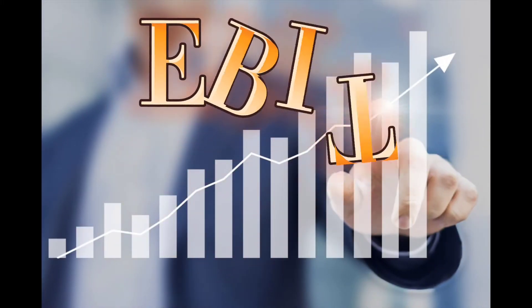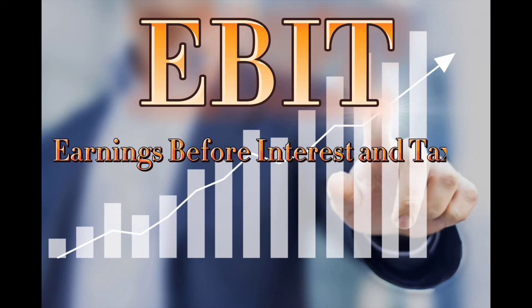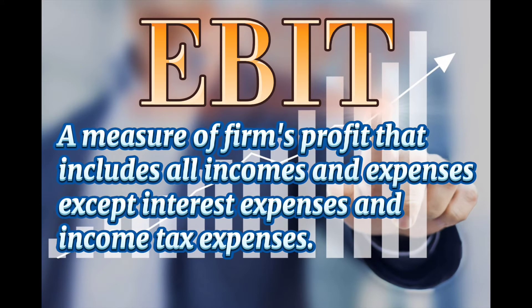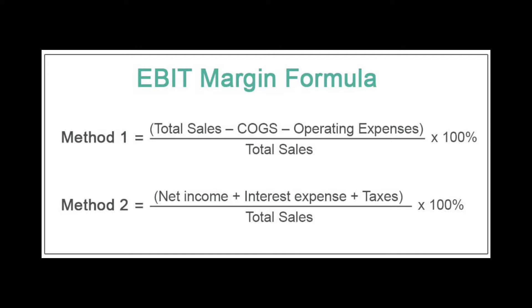Meron din tayong tinatawag na EBIT, or the Earnings Before Interest and Taxes. EBIT is a measure of a firm's profit that includes all incomes and expenses except interest expenses and income tax expenses. So when we say EBIT, yung income na na-generate ng isang company na hindi pa natatanggal o nababayaran yung mga taxes and interest. There are two methods para makuha natin yung EBIT. The first one is: total sales minus cost of goods sold minus operating expenses, divide by total sales, times 100.